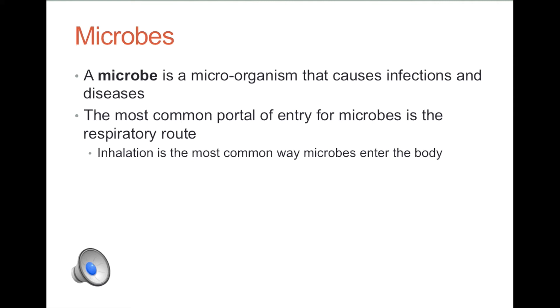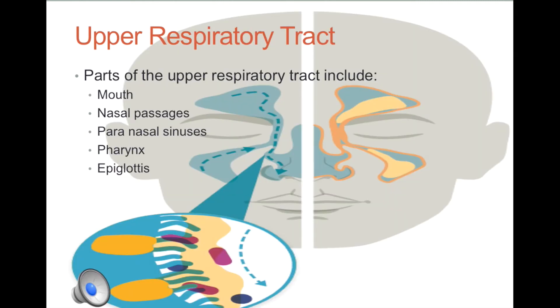The respiratory system is divided into two parts: the upper respiratory tract and the lower respiratory tract. The upper respiratory tract consists of the mouth, nasal passages, paranasal sinuses, pharynx, and epiglottis.